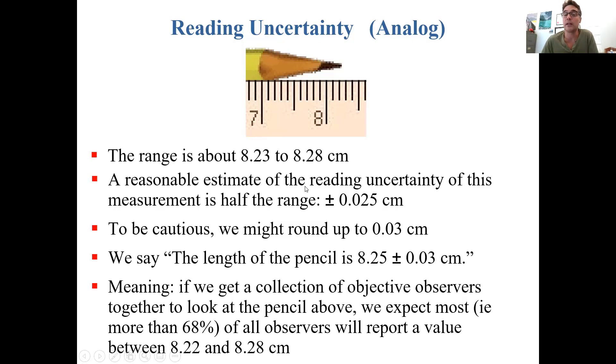This means that if we get a collection of objective observers together to all look at that pencil and use a ruler, we would expect that most of them, so more than 68 percent, would report a value in this range: 8.25 plus or minus 0.03.